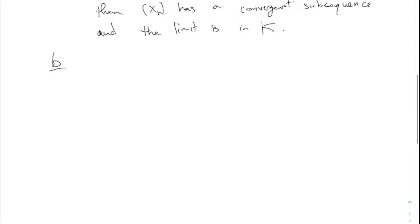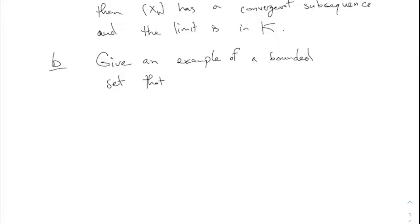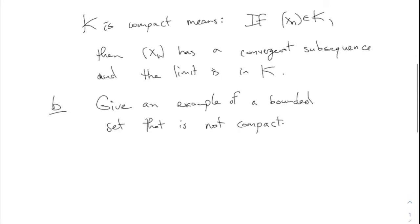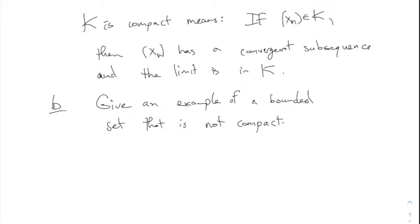Part B. Give an example of a bounded set that is not compact. Not compact means there's a sequence which has no convergent subsequence, or maybe it does converge but the limit is not in your set. So, can you think of a bounded set which is not compact?